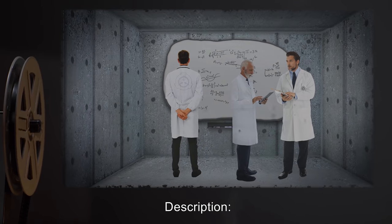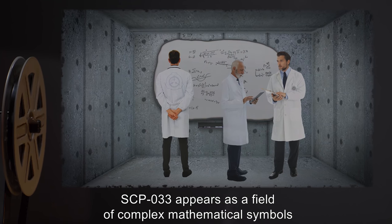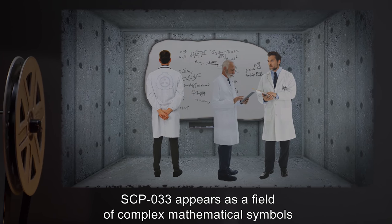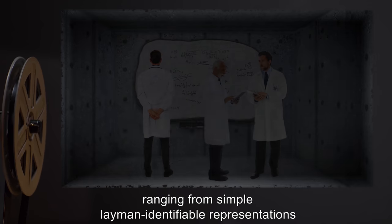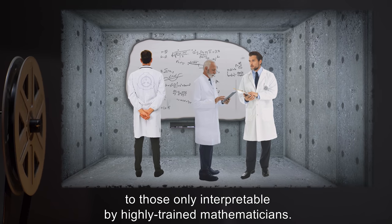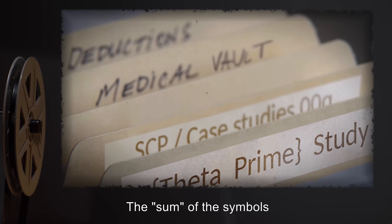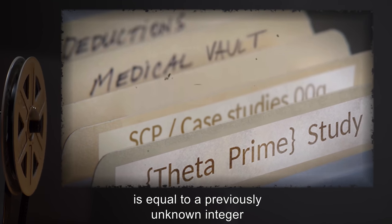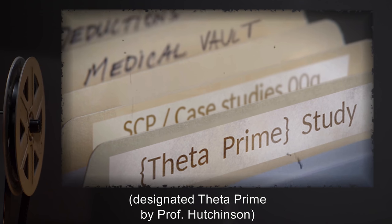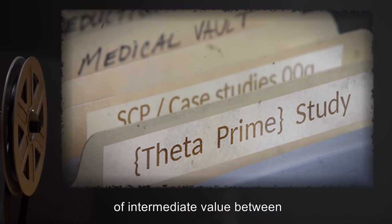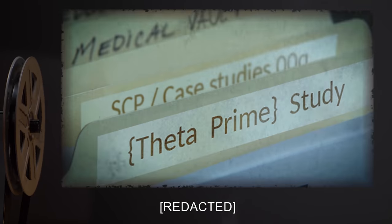Description: SCP-033 appears as a field of complex mathematical symbols, ranging from simple layman-identifiable representations to those only interpretable by highly trained mathematicians. The sum of the symbols is equal to a previously unknown integer, designated theta-prime by Professor Hutchinson, of intermediate value between.